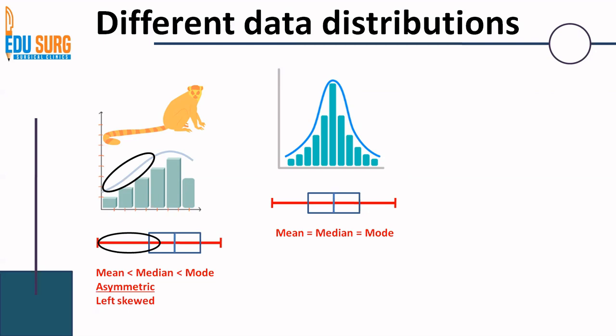If you want a mnemonic, it's easy: the tail is on the left, the mean is on the left, the data is skewed to the left. So: left tail, left mean, left skew. Mean is less than median, and the data is skewed towards the left. Left is always negative, so this is also called negatively skewed. This is how you can remember this part.